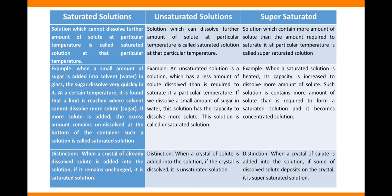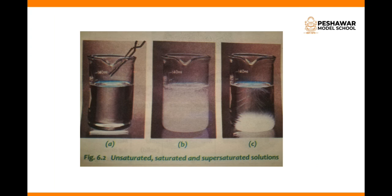Super saturated میں ہمیں heat apply کرکے saturate کیا جاتا ہے۔ If you look at this diagram: A is unsaturated, B is saturated, and C is super saturated. In A, the solute is fully dissolved. In B, the solution is cloudy — meaning solvent has reached its capacity. And in C, crystallization takes place — the process of crystallization when we introduce a crystal.